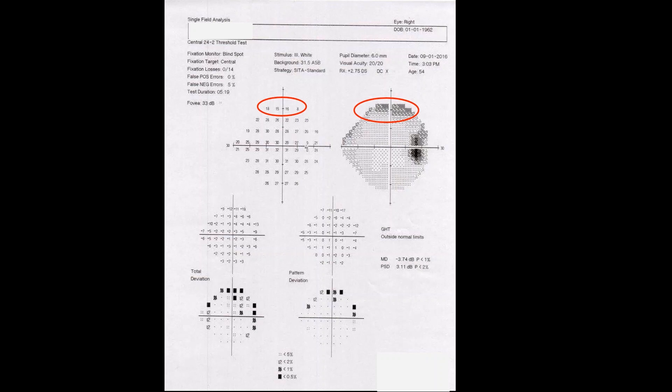This patient had droopy upper lid which resulted in decreased sensitivities in the superior portion of the central field which was accentuated on grayscale plot.